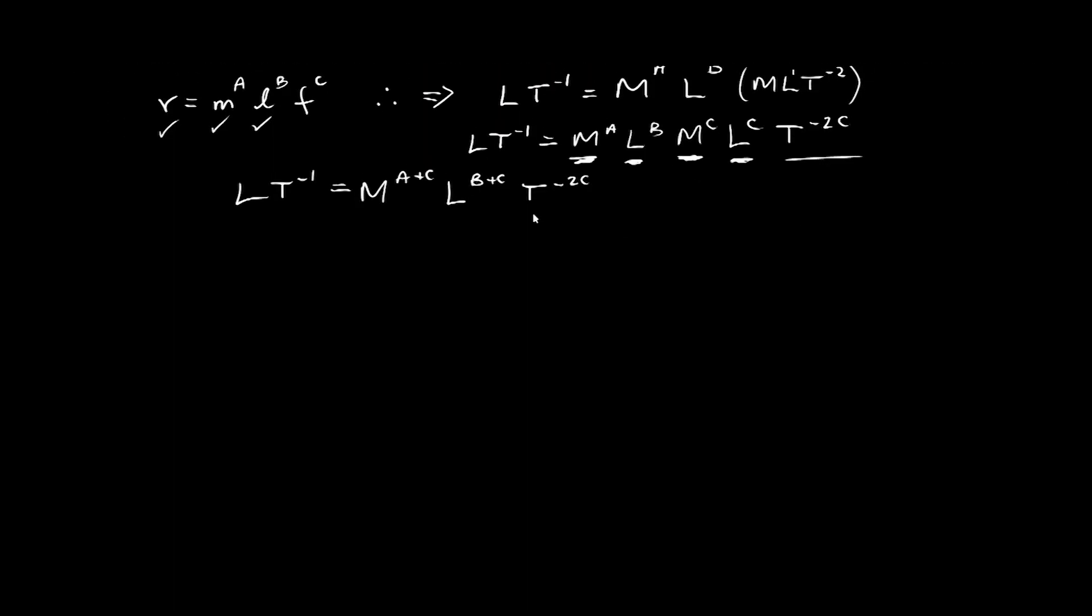We can tidy this up a little bit further. And we can say, just move it to the left now. L T to the minus one equals, have a look at our M's. Here's one, here's another one. So M to the A times M to the C. We obviously have to add the indices. So it's going to be M to the A plus C. Have a look at our L's. Here's an L, here's another L. Add those powers. L to the B plus C. Finally, we just have a solitary T here. So we have T to that minus two C. Now it is time to make the next step. And the next step is to equate indices. Equate indices.